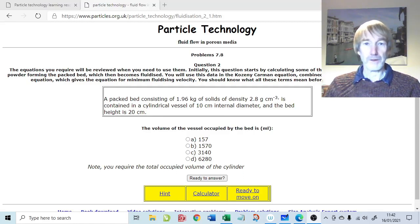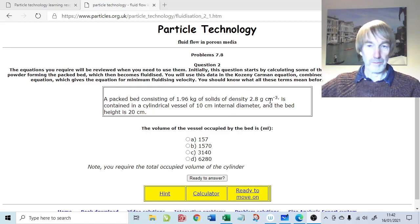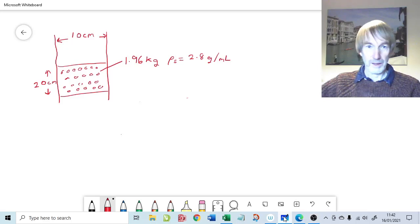We're talking here about fluidization and initially we need to work out what the voidage is. We're given the data shown in this little box. A packed bed consisting of 1.96 kilograms of solids, density 2.8 grams per centimeter cubed, a bit of a mixed set of units there. The vessel is 10 centimeters internal diameter and the bed height is 20 centimeters. So if we pop over to the diagram, that's what I've represented just here.